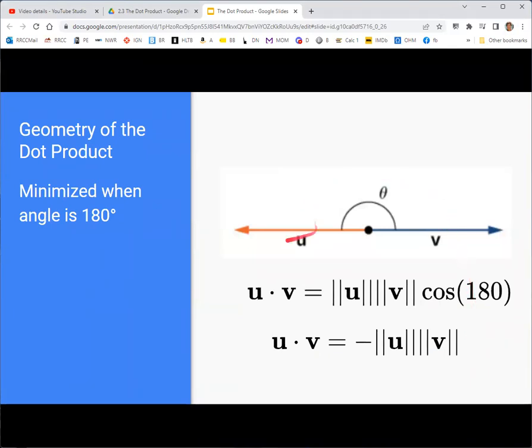Now, if you keep increasing that angle to where they're pointed in opposite directions, then you get back to cosine being negative 1. And so here this is the same absolute value of the product, the magnitudes, but now it's a negative number. So I guess technically this is the minimum value of the dot product if they're pointed in opposite directions.